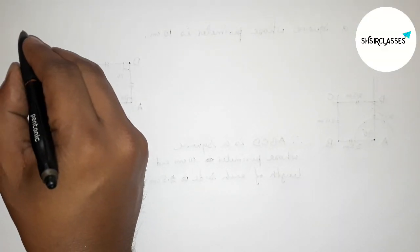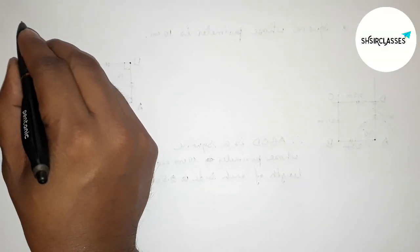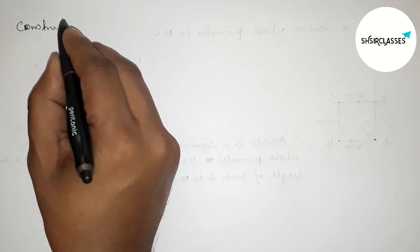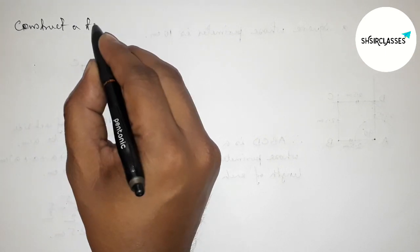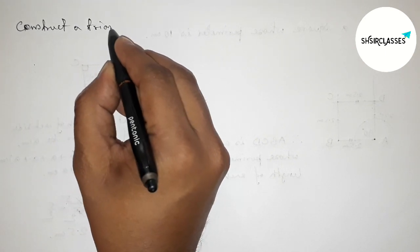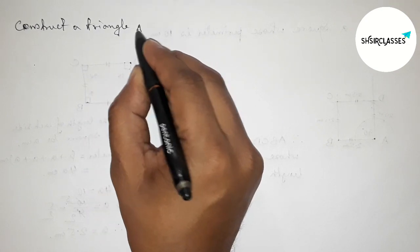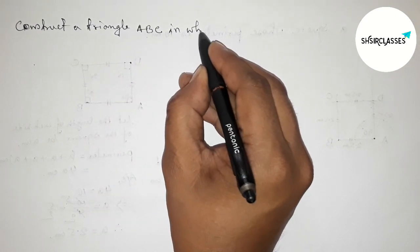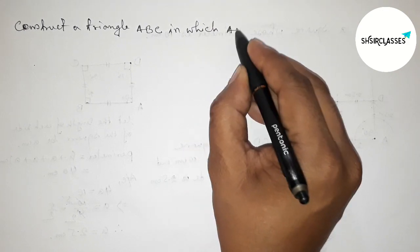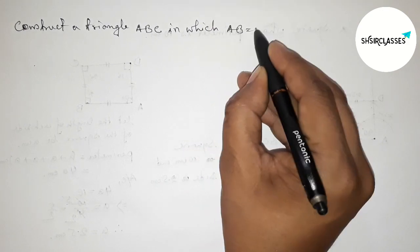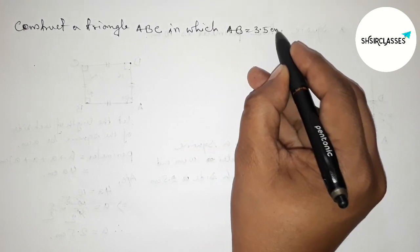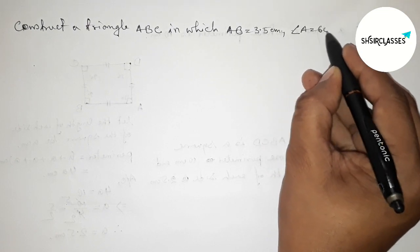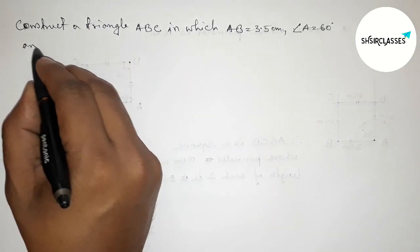Hi everyone, welcome to SI Share Classes. Today in this video we have to construct a triangle ABC in which AB equals 3.5 centimeters, angle A equals 60 degrees, and AC equals 3 centimeters. Please watch the video till the end.